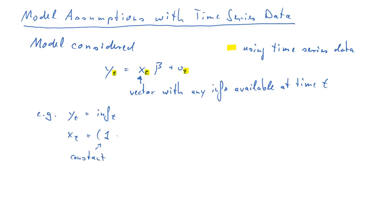So xt is a vector where the first element could be 1 to indicate that we have a constant. Then we could have unemployment at time t, but perhaps also unemployment at time t minus 1 and t minus 2, so in previous quarters, and we may have values of inflation itself lagged at time t minus 1 and t minus 2. So this xt is going to be a vector of explanatory variables.